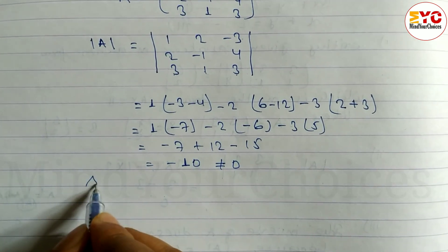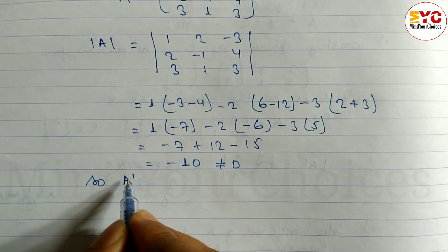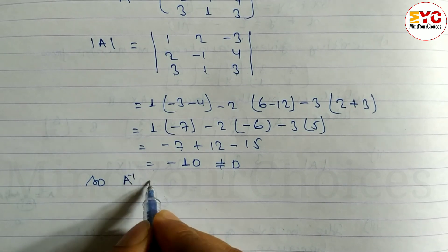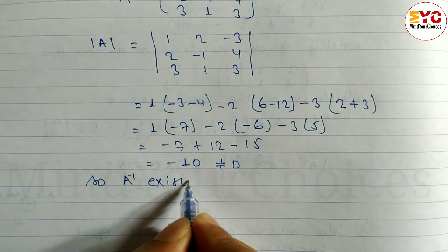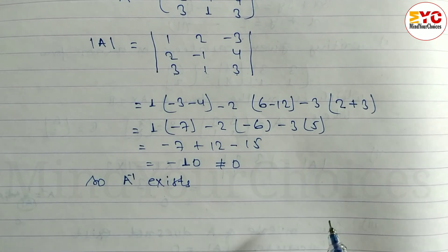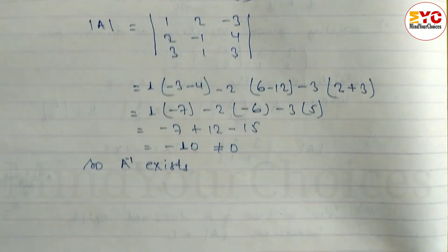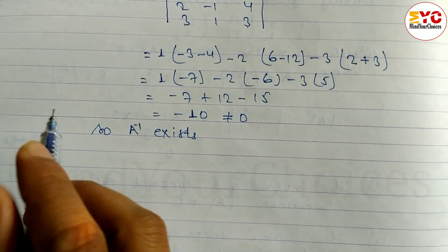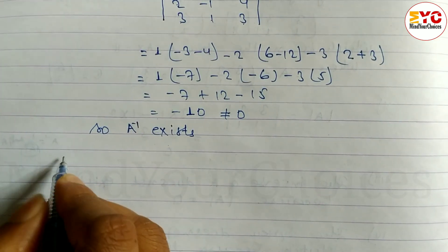Since the determinant is not equal to zero, A inverse exists. Now we have to find out the cofactors. Let's calculate the cofactor matrix.